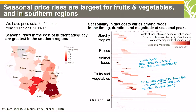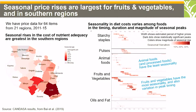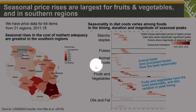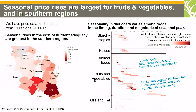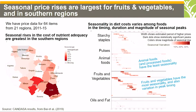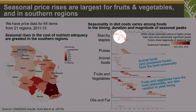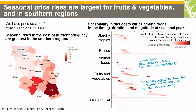Basically, the seasonality in the diet costs varies amongst food groups in the timing, duration, and magnitude of the seasonality peaks. We consider different food groups. You will notice that on the vertical axis we have the starch staples, pulses, animal food, fruits, vegetables, oil, and fats. And we have the months across the horizontal axis.